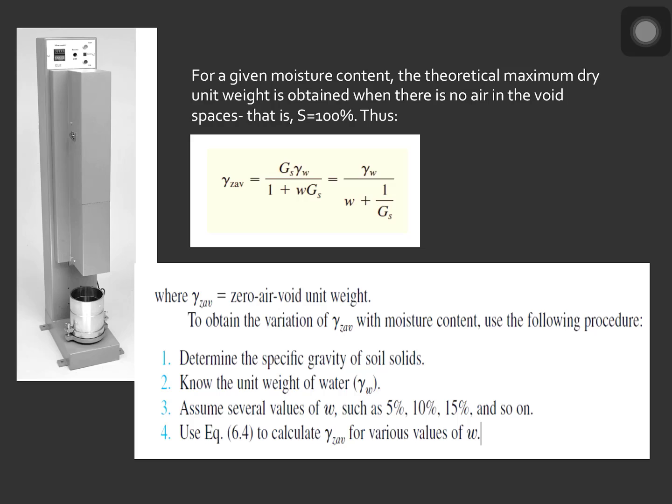To obtain the variation of the zero air void unit weight with moisture content, we shall use the following procedures. Number 1, determine the specific gravity of the soil solids. Number 2, know the unit weight of the water. Number 3, assume several values of the moisture content such as 5%, 10%, 15%, and so on. And number 4, use the equation on the screen to calculate the zero air void unit weight for various values of moisture content.